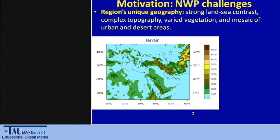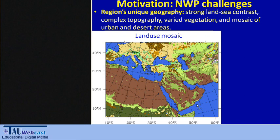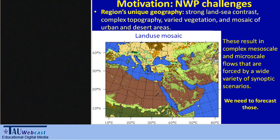The motivation for developing such a system is that our region is unique in its geography, characterized by strong land-sea contrast, complex topography, and different types of vegetation, urban, and desert areas. This results in complex mesoscale and micro-scale flows that are forced by a wide variety of synoptic types and scenarios, and we need to forecast all of those at all scales.